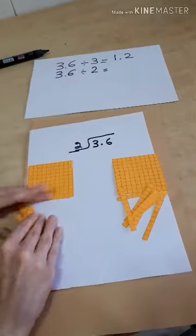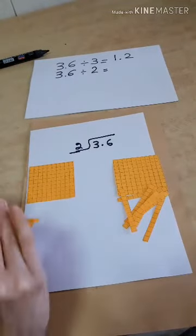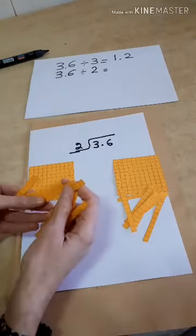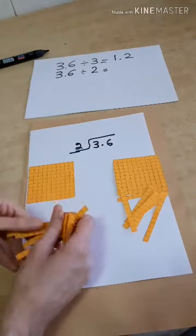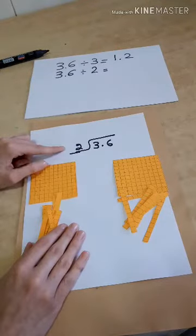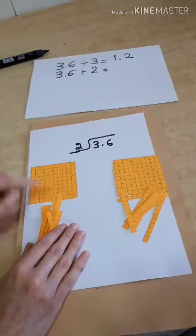Now, I want to count them. I want to see how much I put. I put 1, 2, 3, 4, 5, 6, 7, 8. I put 8 tenths. So, when I divided the 3.6 among two groups, I had 1.8.